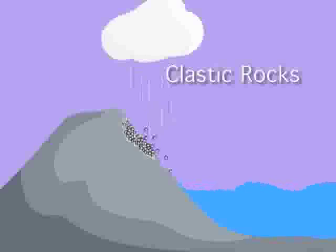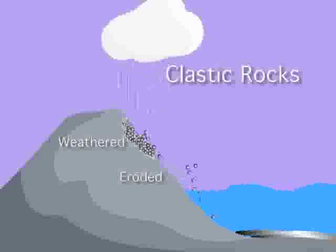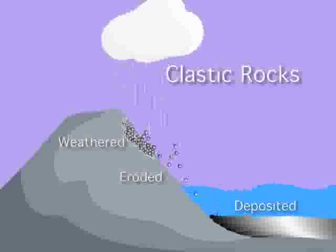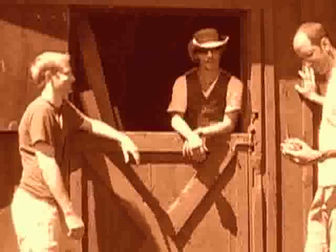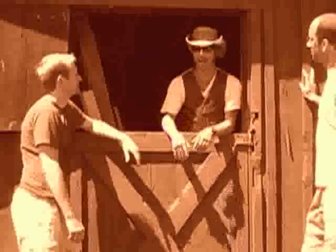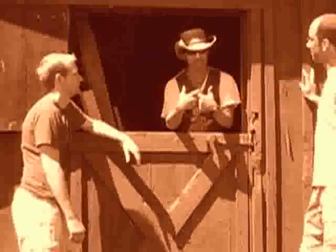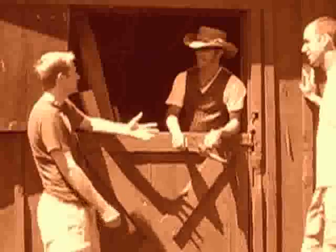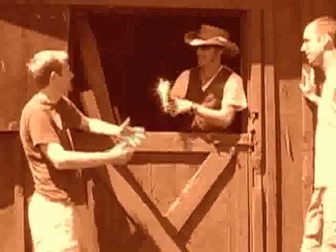Clastic rocks are formed by other rocks that are weathered into fragments and eroded by streams, wind, or glaciers, and deposited as layers in the ocean — like a sedimentary sandwich. The layers at the bottom get compacted by the layers on top, and minerals come together and cement them to make sedimentary rocks. It's the size of the particles that we base the names on.